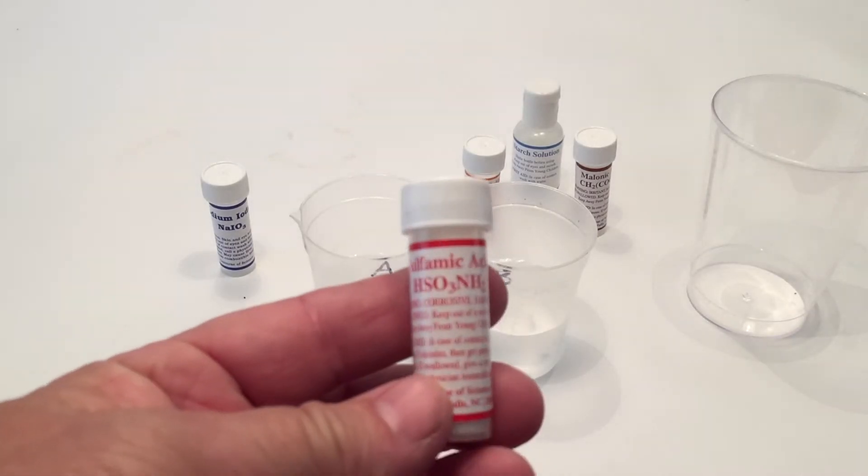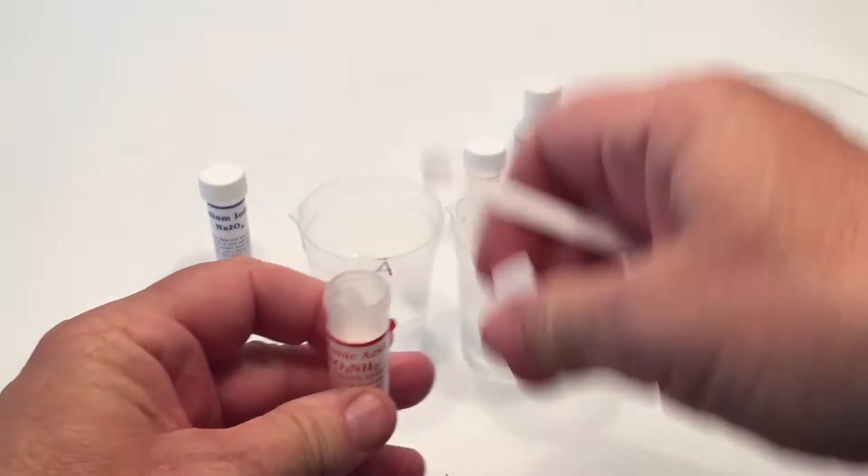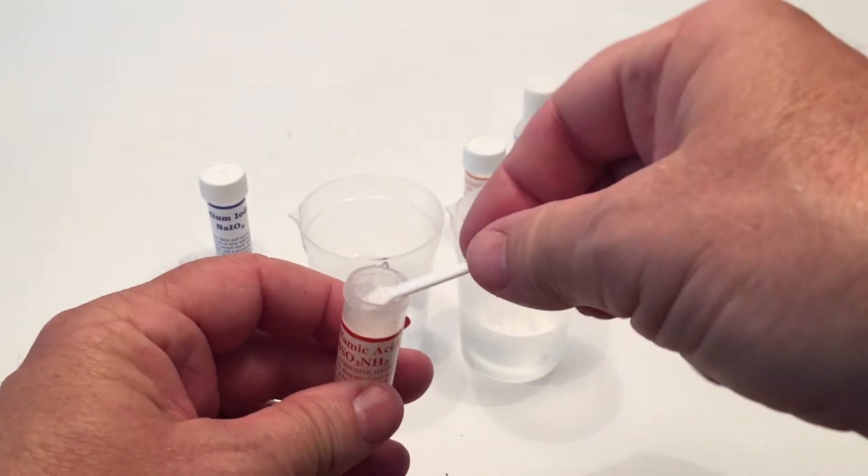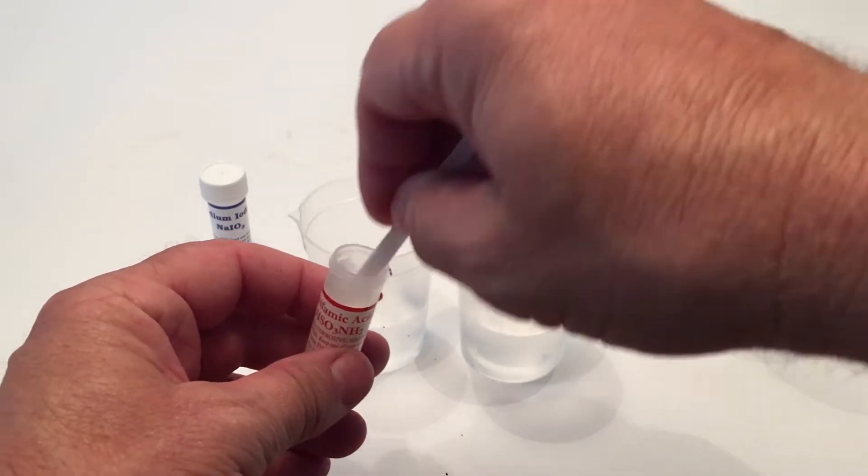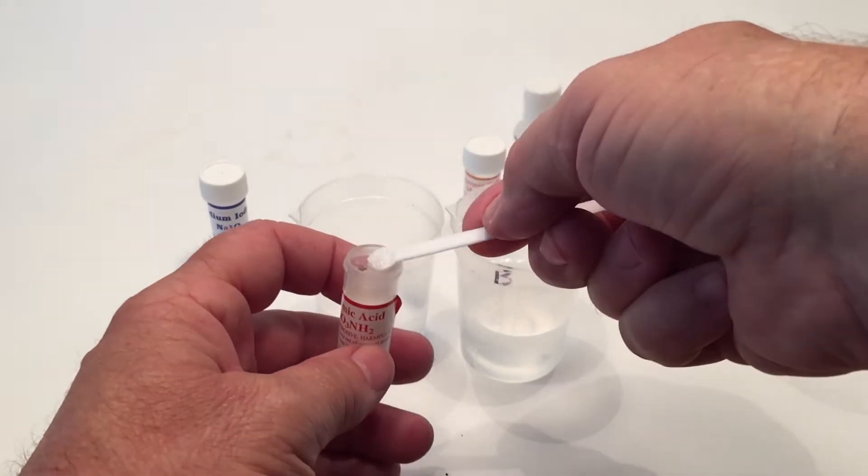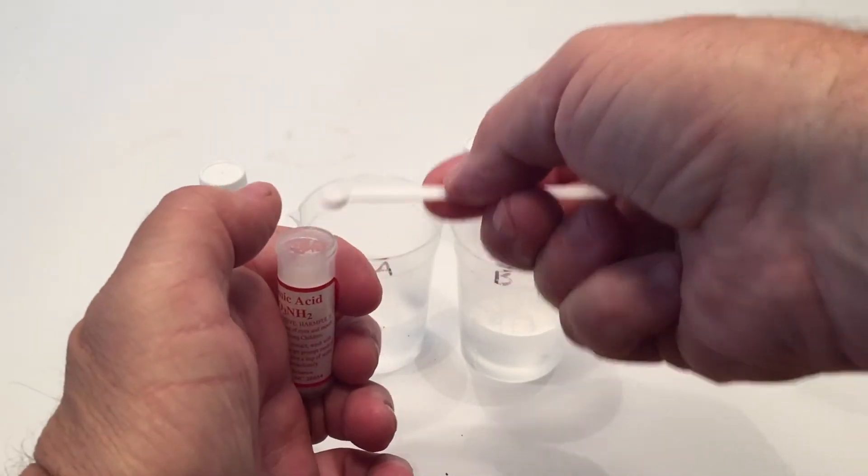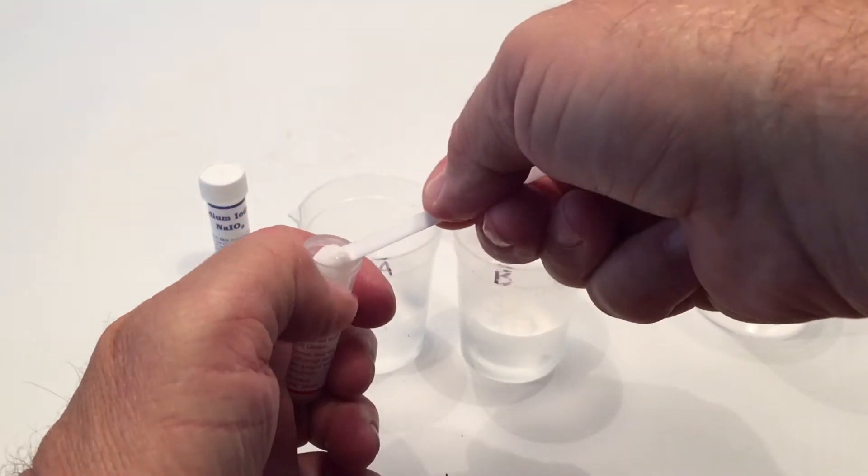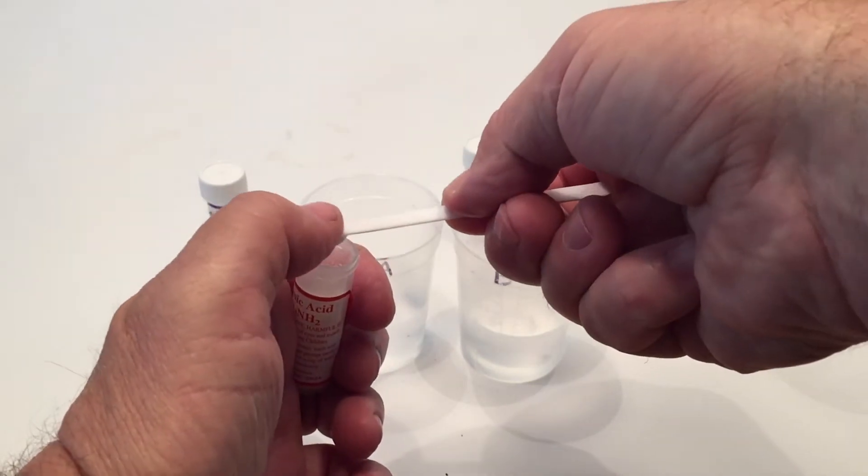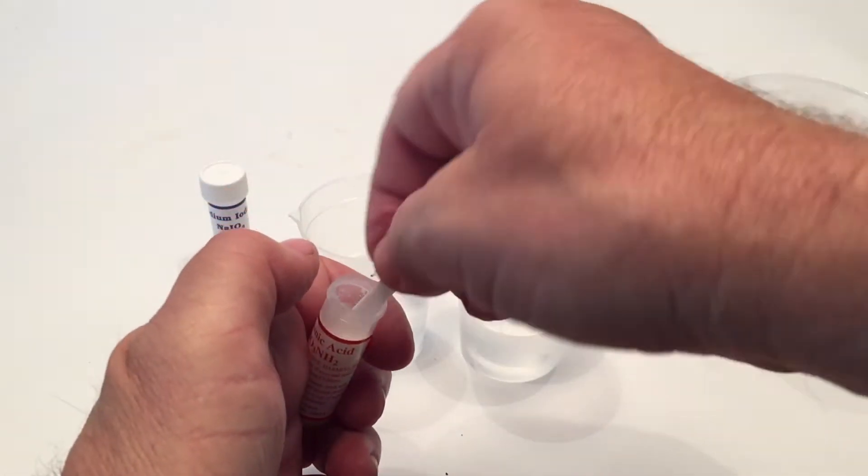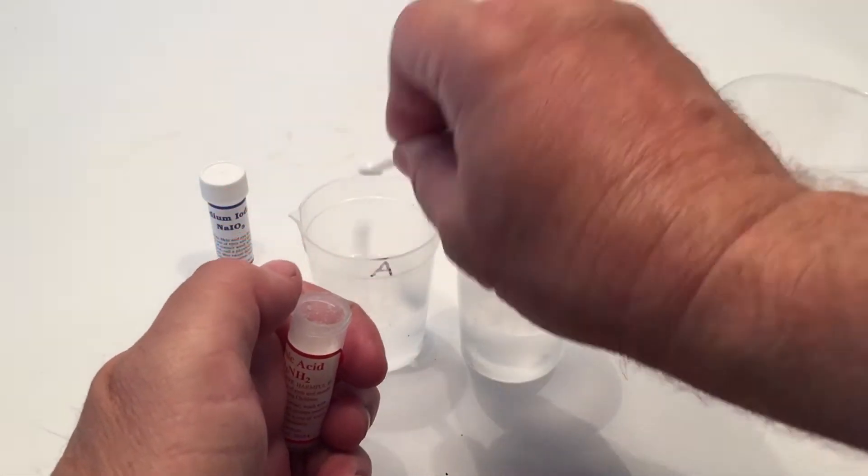Now in cup A, we're going to put sulfamic acid. We're going to put four of the little scoops. The scooper comes with the kit. So we're going to put four of these scoops, kind of level it out if you need to, and you put four of those in solution A only. And that was the distilled water that was in A.